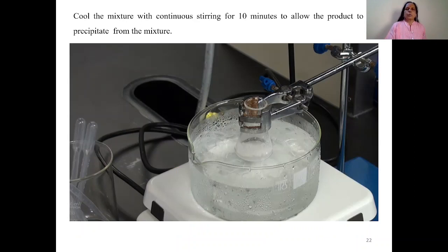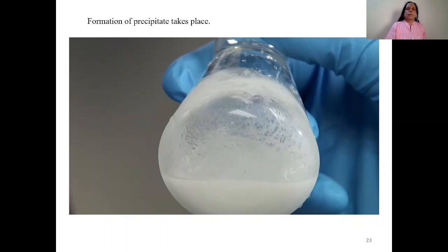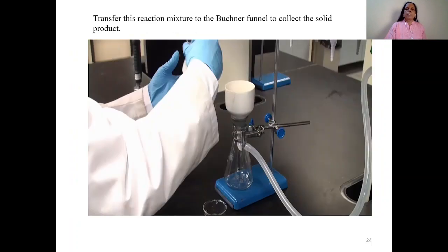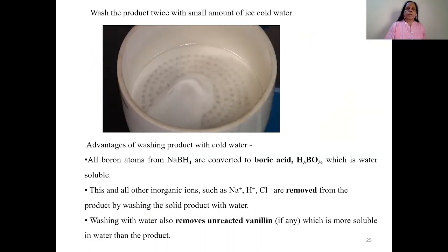After addition of HCl, cool that reaction mixture with continuous stirring for 10 minutes to allow the formation of product. That means you will get precipitate of that particular product. This is the formation of precipitate. Now transfer that reaction mixture to the Buchner funnel to collect the solid product. Now when you are filtering that solution, you will get filtrate and residue. Residue is your product. Now you wash that product twice with small amount of ice cold water. This is more important, you have to wash that with ice cold water.